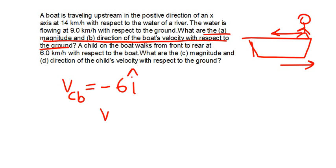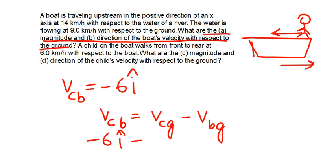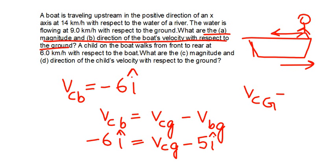Now, VCB is equal to VCG minus VBG. We know VCB is minus 6 î, and VBG we already calculated is 5 î. So VCG becomes minus 6 î plus 5 î, which gives minus 1 î. Therefore, the velocity of the child with respect to the ground is 1 km per hour in the negative x-direction.